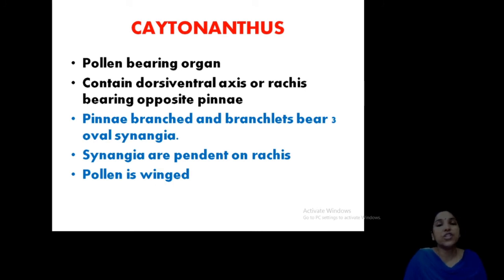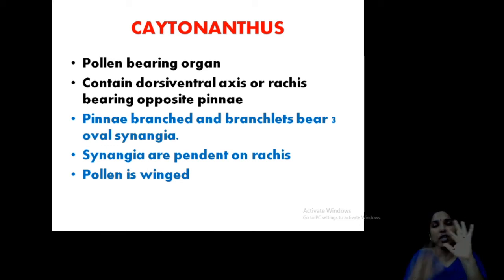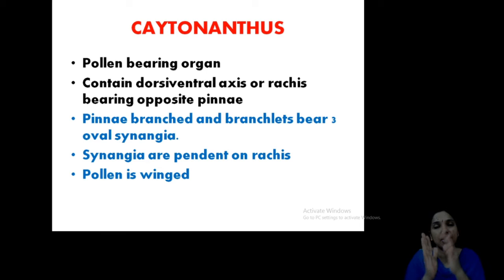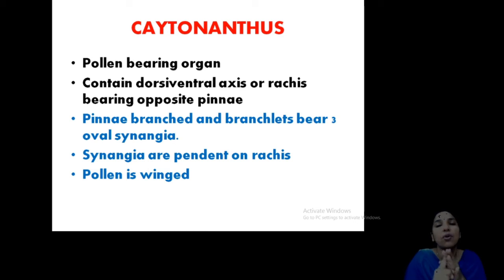So we have finished Chitonia. Chitonia is very important — it is the female fructification or the megasporophyll. It has a cupule-like structure inside which seeds are protected. There is a micropylar region, a pollen chamber, integuments, and ovules.